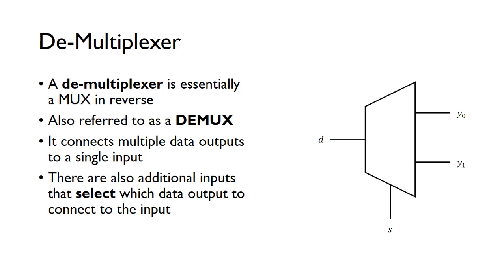That's how you build a multiplexer. There's also a de-multiplexer, which is essentially a MUX in reverse, also called a DEMUX. Now we've got a single input d that we can route to different outputs. In this example, we've got two outputs y0 and y1, and the select bit selects whether d is sent to y0 or to y1.